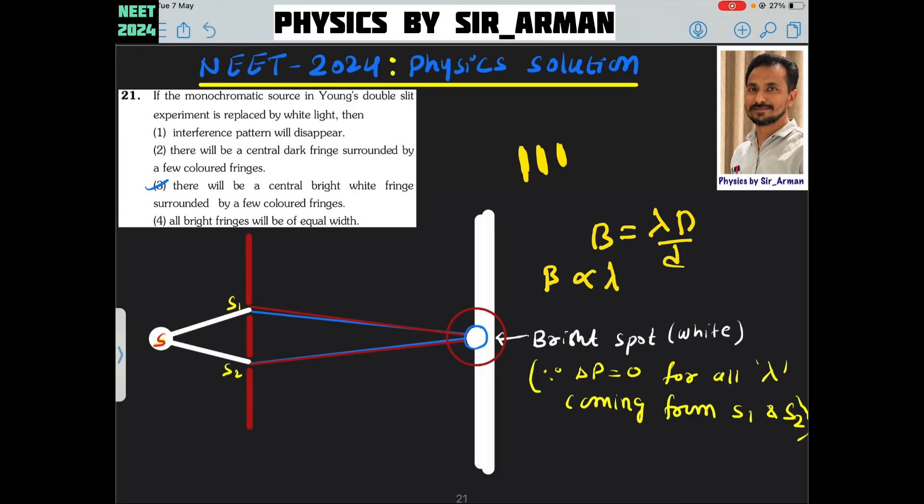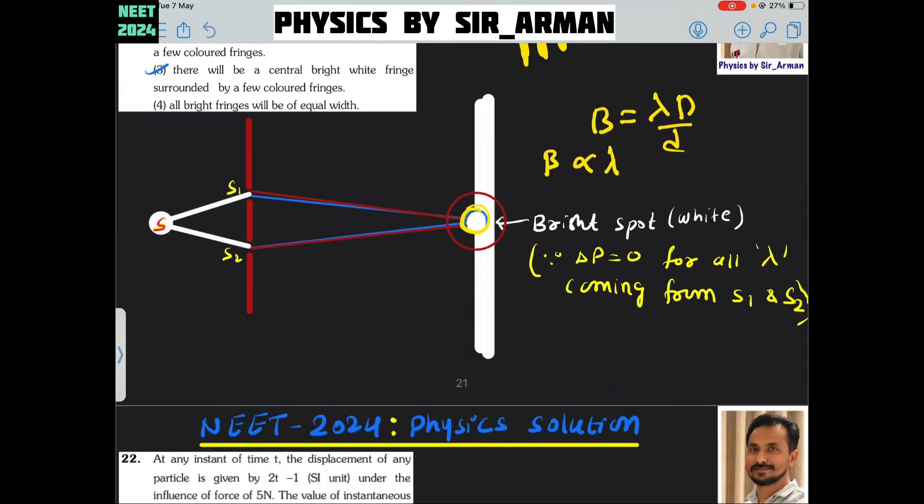Hence, at the end you will observe red, and at the center you will observe white, and in between here you will observe blue or violet. Hence, the correct option is there will be a central bright white fringe surrounded by a few colored fringes.